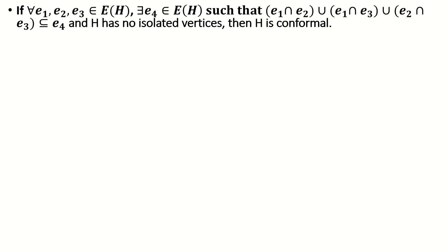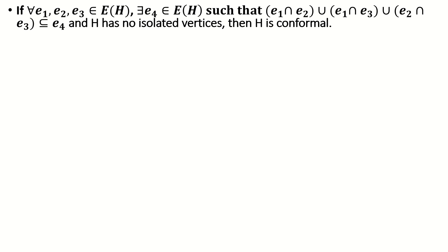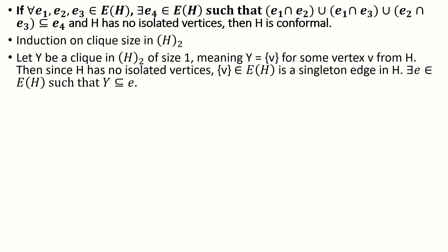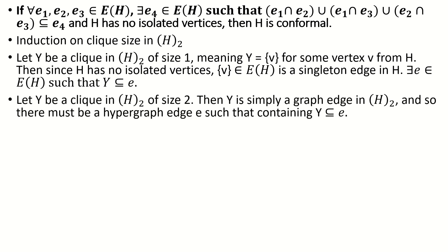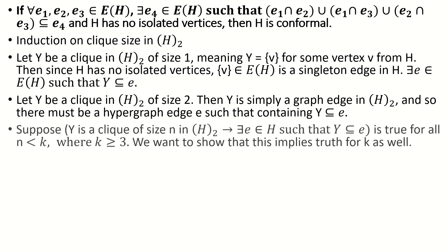For the other direction, suppose we have a hypergraph h that satisfies our property. We're going to show that it implies that any clique in the two-section is contained by some edge, which by our first theorem is equivalent to showing the hypergraph is conformal. We're going to induct on clique size in the two-section. Any clique of size 1 represents a vertex contained by a singleton edge, as otherwise our hypergraph would have isolated vertices, so any clique of size 1 is contained by some edge. Any clique of size 2, which is just an edge between two vertices in the two-section, represents two vertices that are adjacent, meaning they're contained by the same edge — therefore there's an edge in the hypergraph that contains this clique. We've verified the base cases for clique sizes 1 and 2.